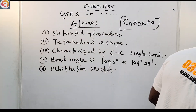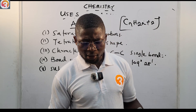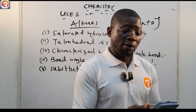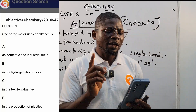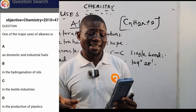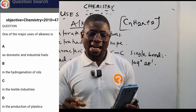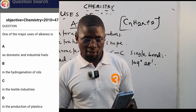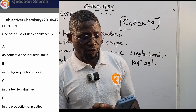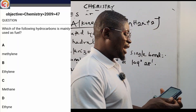Now let us jump to the past questions from the app. The 2010 question number 47 asks: one of the major uses of alkanes is — the clear answer is option A: as domestic and industrial fuels. That is one of the major uses of alkanes.